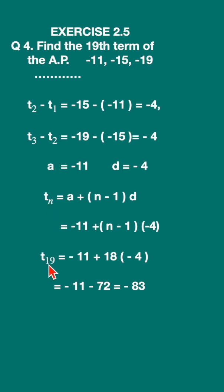tn will be t19, is equal to minus 11 plus, here n minus 1, n is 19.